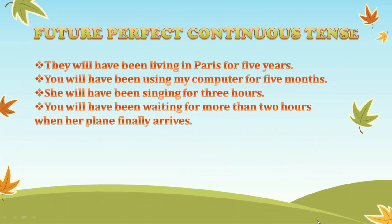Here are some examples of future perfect continuous tense. 'They will have been playing in Paris for five years' — will have been plus the ing form of the verb. 'You will have been using my computer for five months' — will have been plus the ing form of the verb. In all these sentences, we use will have been plus the ing form of the verb.